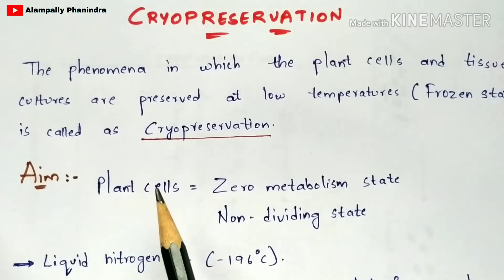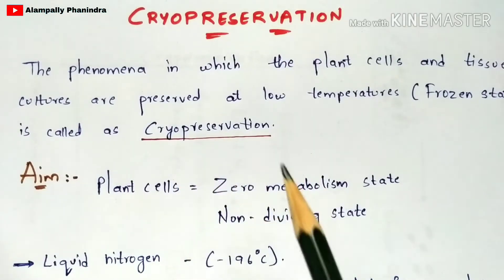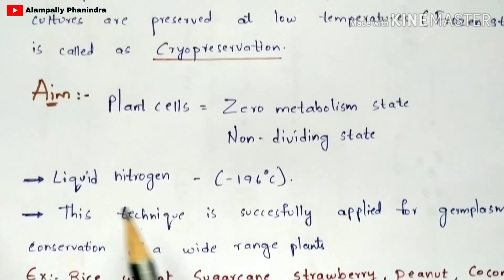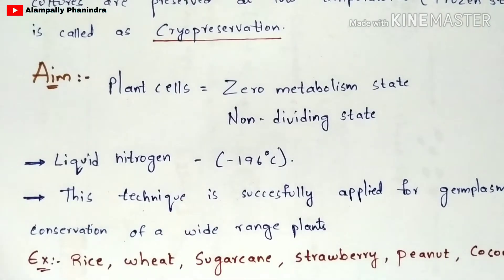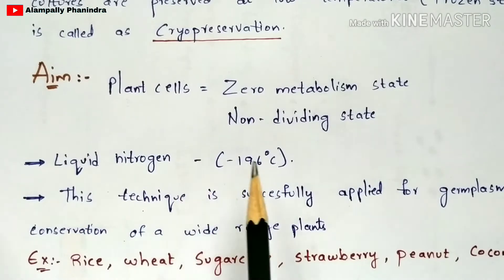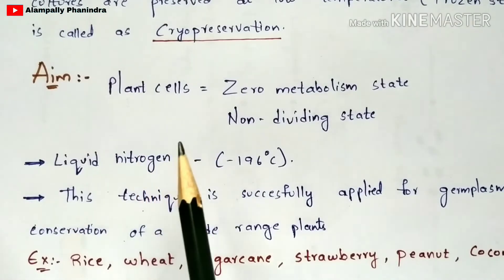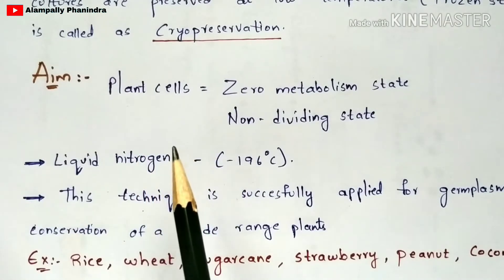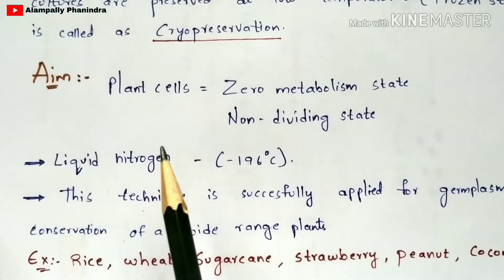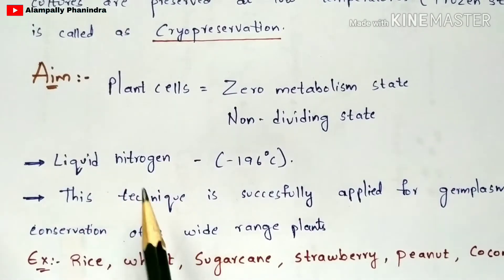When we want to cryopreserve a plant, liquid nitrogen plays a major and vital role in the cryopreservation technique. Liquid nitrogen is mainly used in this technique, and minus 196 degrees Celsius is applied. At this temperature, the plant cells or whatever biological materials you want to take can be easily and properly stored.